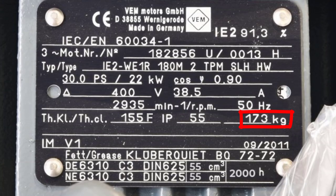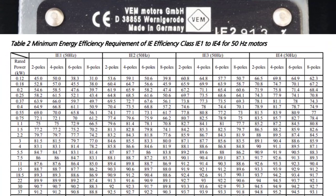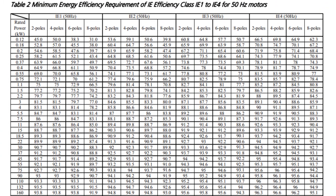Motor weight is 173 kilograms. On the top right, we have the international efficiency classes: IE1 (standard efficiency), IE2 (high efficiency), IE3 (premium efficiency), and IE4 (super premium efficiency). Using the output power and number of poles, we can look up the full load efficiency. In our case, with 22 kilowatt, 2 poles, and IE2, the efficiency equals 91.3%.